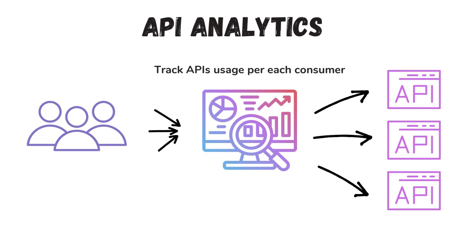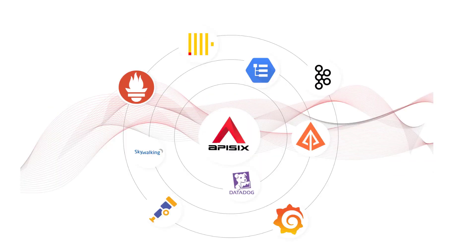This usage data can be used to bill each consumer and send an invoice to collect monthly payments. For example, Apache APISIX can also integrate with a variety of observability platforms like Prometheus, OpenTelemetry, and Apache SkyWalking, using its connected plugins for further analysis of API performance and to gain complete visibility.